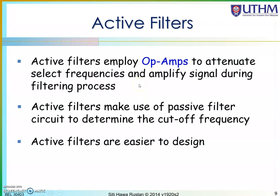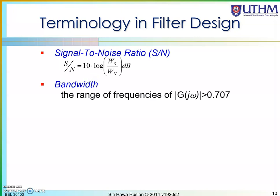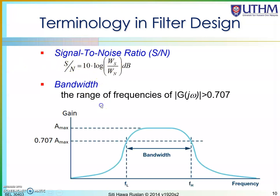Active filters will be the main topic of this course. We look at circuits consisting of op amps that can attenuate certain frequencies and amplify those that we want. There is some important terminology: signal-to-noise ratio measures how well your filter rejects noise at the input. Bandwidth is the range of frequency from the low cutoff to the high cutoff frequency — where the gain is greater than 0.707 of the maximum (mid) gain.